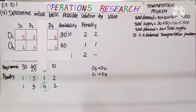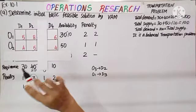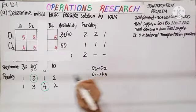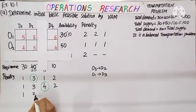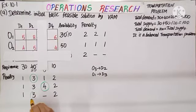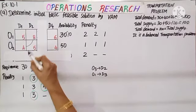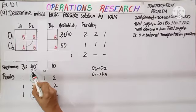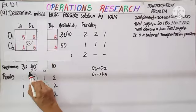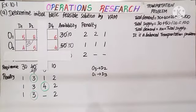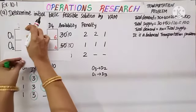Calculating the penalty again. O1 row: 6 minus 5 is 1. O2 row: 5 minus 4 is 1. Column-wise: D1 — 5 minus 4 is 1; D2 — 8 minus 5 is 3; D4 — 6 minus 4 is 2. Out of all, 3 is the highest penalty. We allocate in this cell. Supply is 50 and demand is 20 — minimum is 20, so we allocate 20. Demand becomes 0, and supply becomes 50 minus 20, which is 30. Hide D2 column, leaving 4 cells.